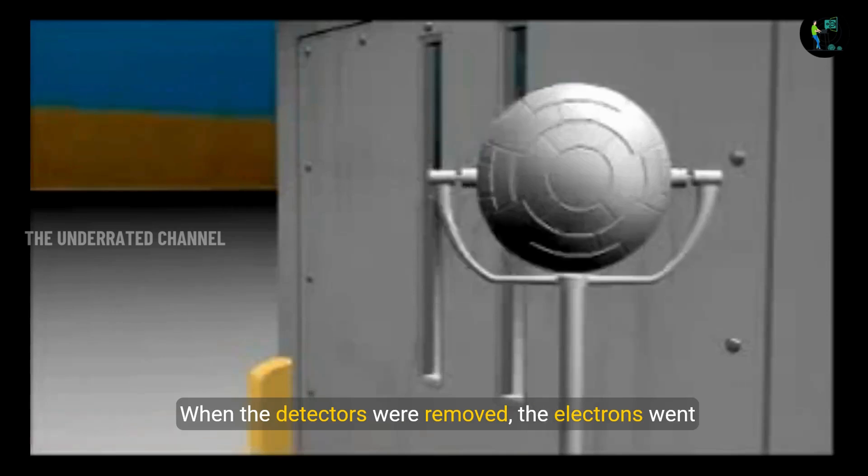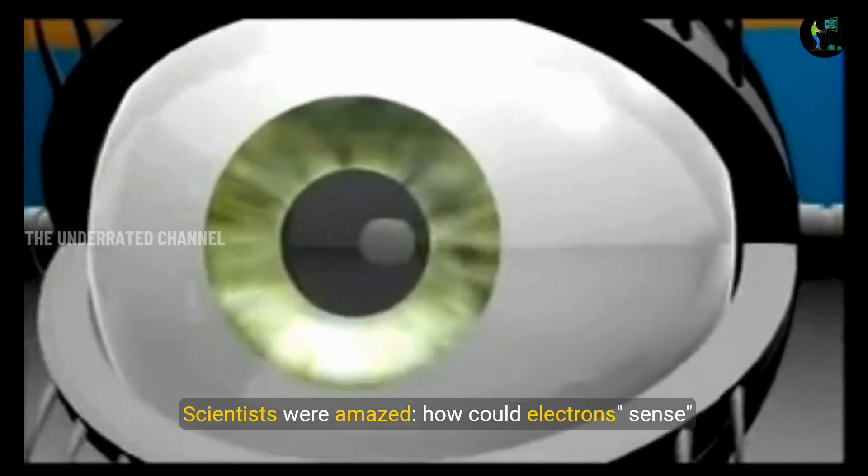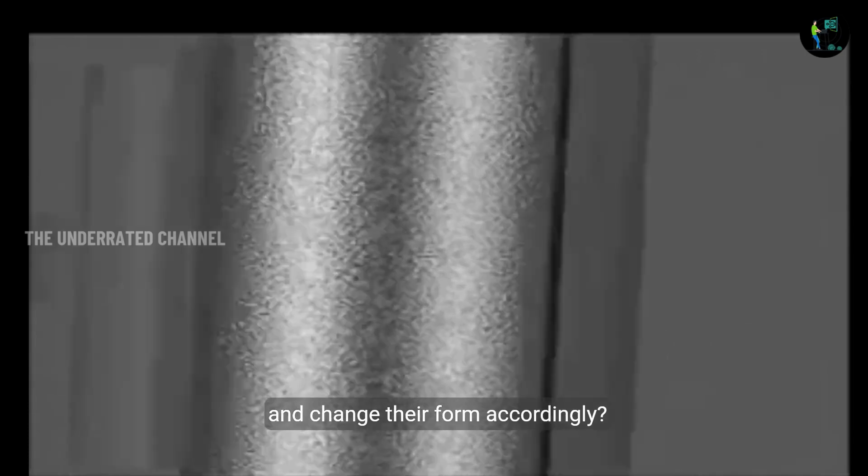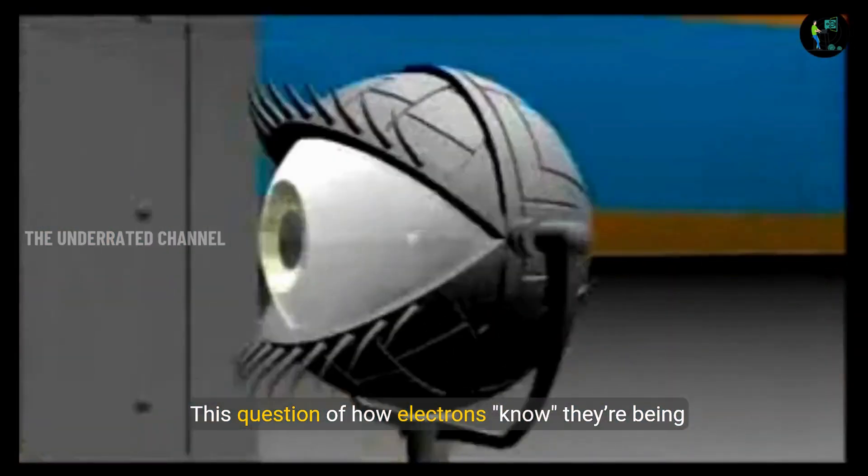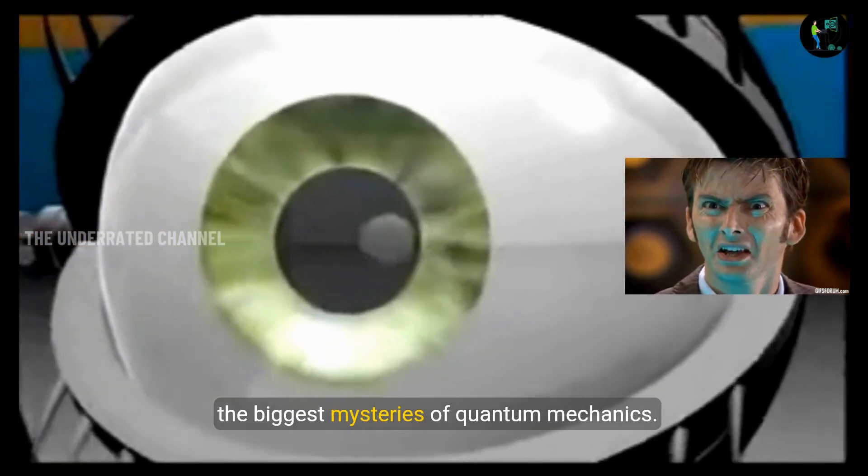And when the detectors were removed, the electrons went back to creating an interference pattern, behaving like waves again. Scientists were amazed. How could electrons sense they were being observed by something and change their form accordingly? This question of how electrons know they are being observed and change their form remains one of the biggest mysteries of quantum mechanics.